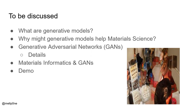Then we'll dig into generative adversarial networks — GANs specifically — and go into some detail. We'll talk a little bit about materials informatics and GANs and how they can be tied together. Then I'll give a little demo. Let me just set a timer to make sure I have enough time for questions at the end. To start, I'm an image processing guy, so this is an image generated by a GAN, posted on Twitter by Melipone.